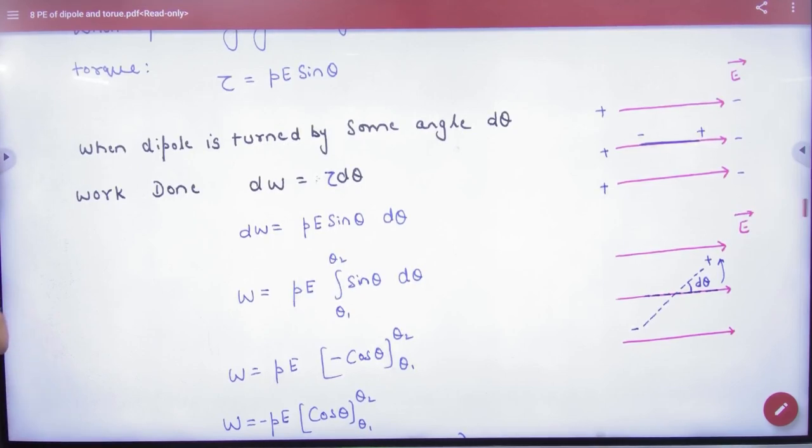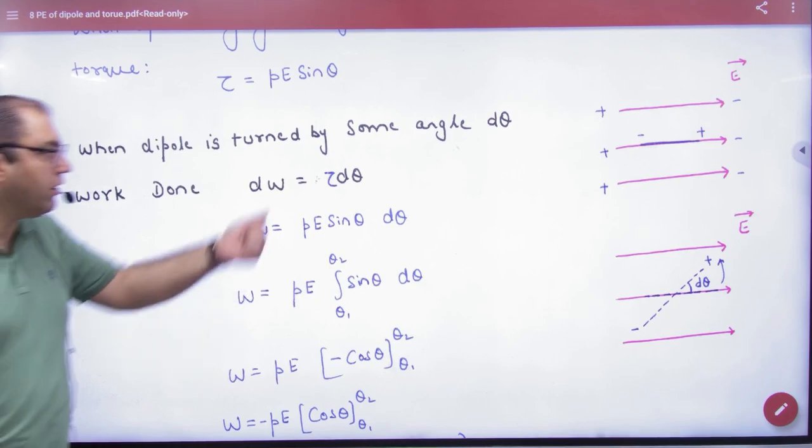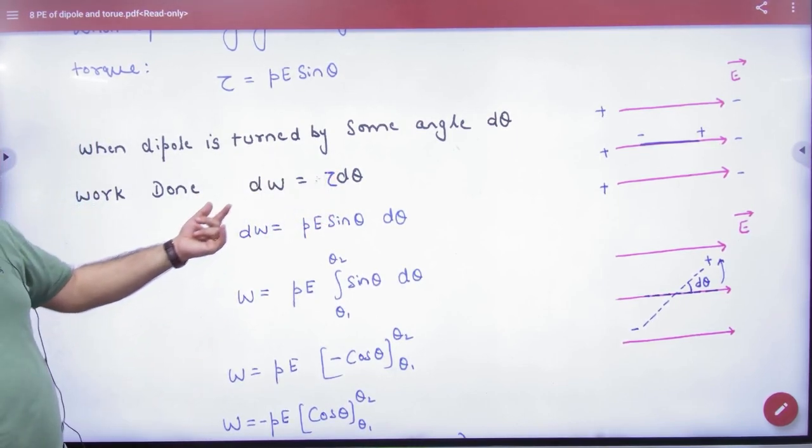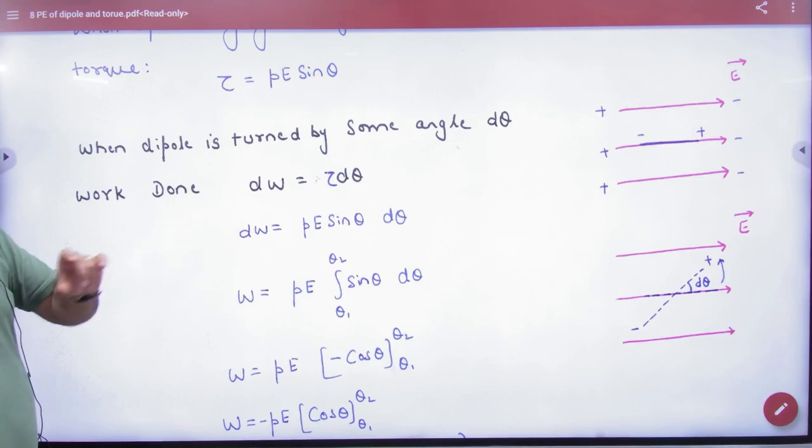Work done value is like f dx in rotational motion. F is where torque is, dx is where d theta. So what will be? dW is equal to torque d theta because we are rotating.